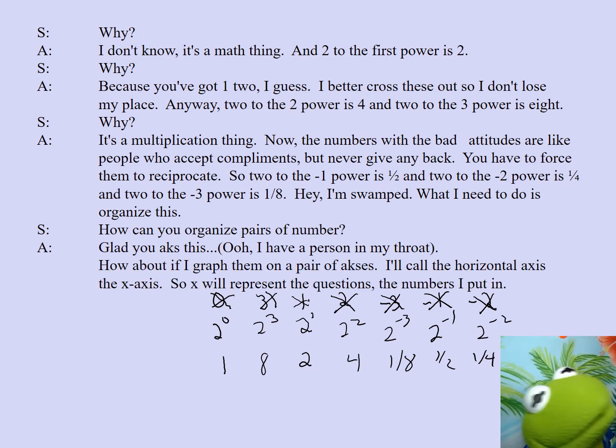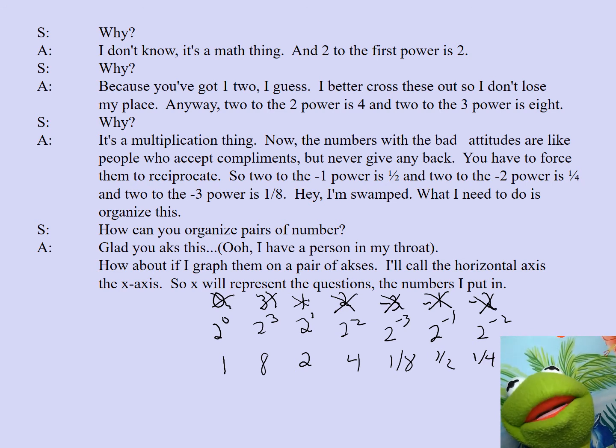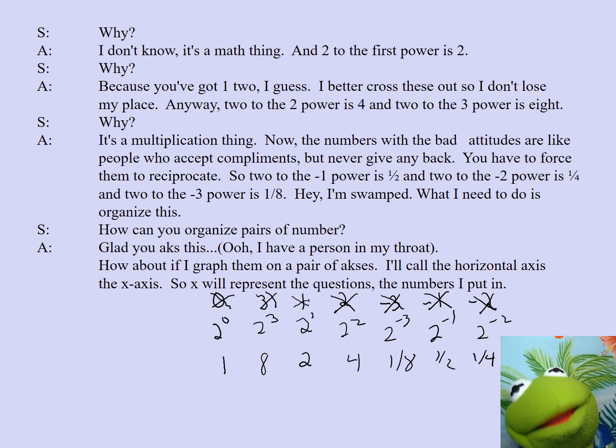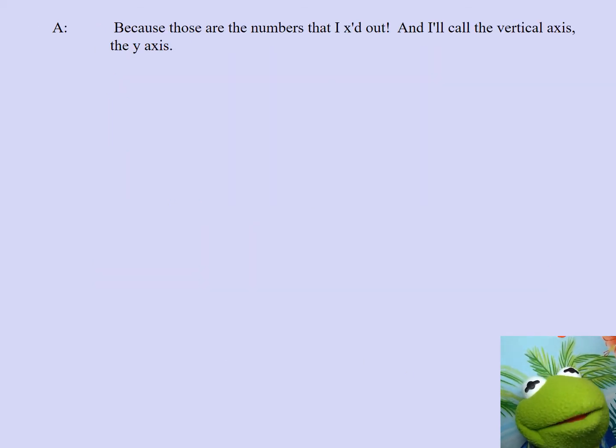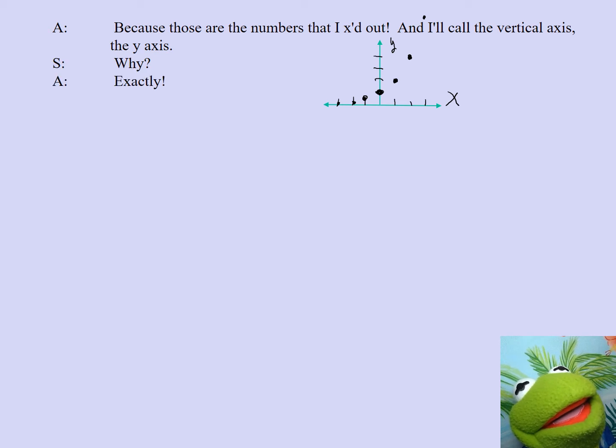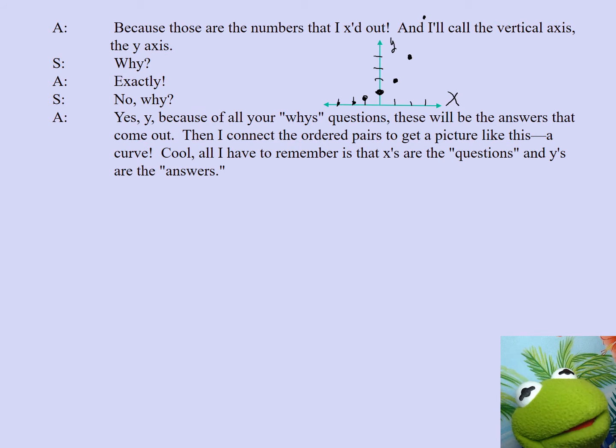Glad you axed. I got a frog in my throat. I'll call the horizontal axis the x-axis so x will represent the questions, the numbers I put in. Why x? Because those are the numbers that I axed out. And I'll call the vertical axis the y-axis. Why? Exactly! No, why? Yes, why?